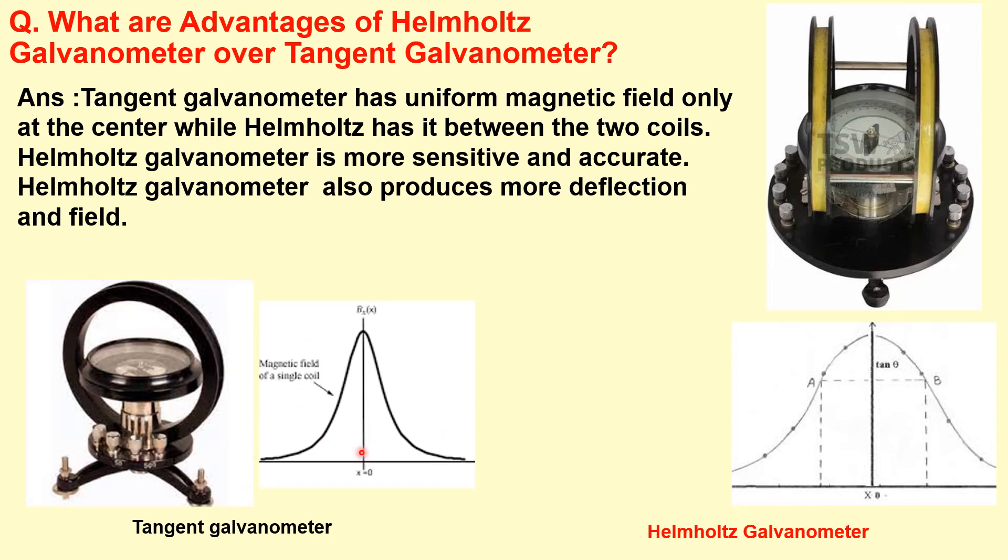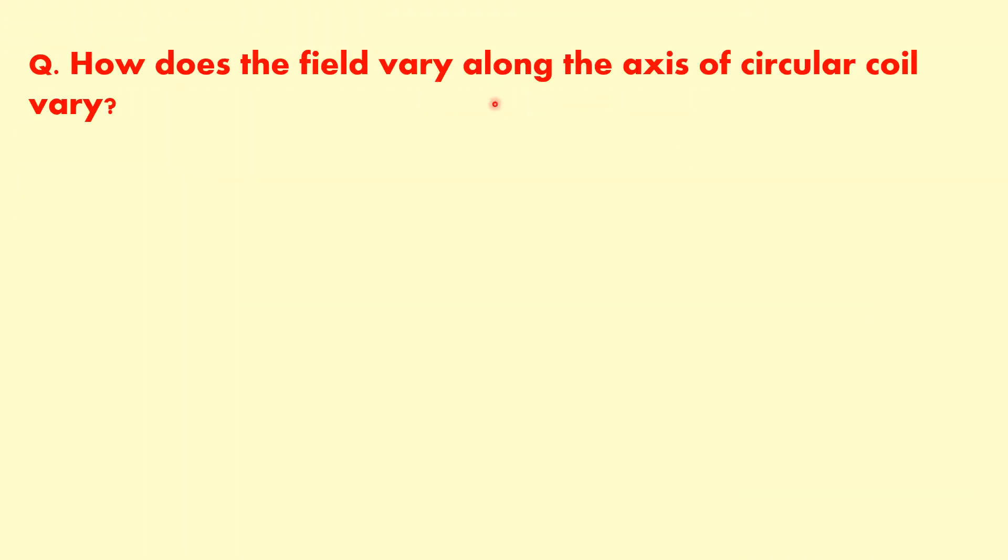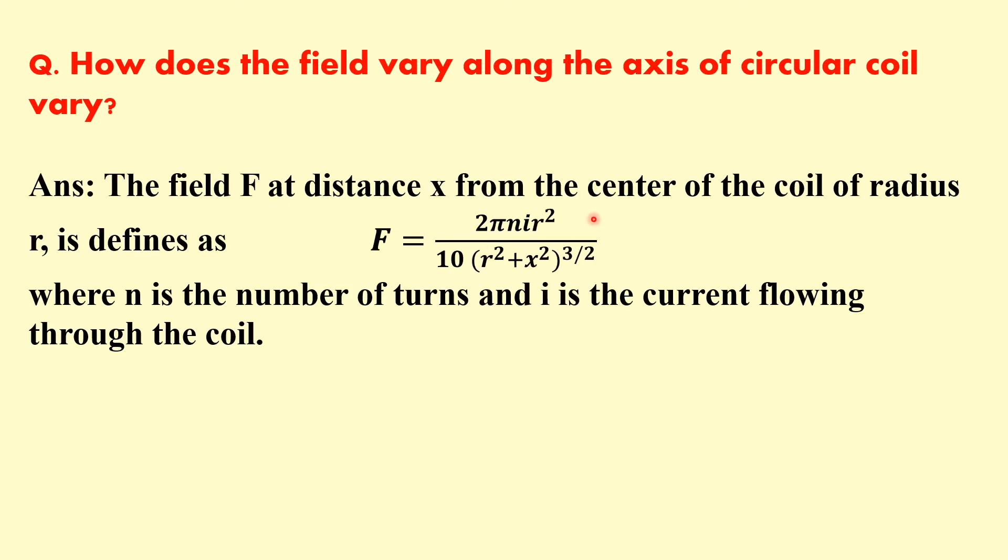These are the graphs of magnetic field versus distance from coil. This is for Helmholtz galvanometer and this is for tangent galvanometer. How do the fields vary along the axis of circular coil? For a circular coil if we want to find out the magnetic field at a distance x, then we have this relation: F equals 2 pi n I r squared divided by 10 times r squared plus x squared to the power 3 by 2.